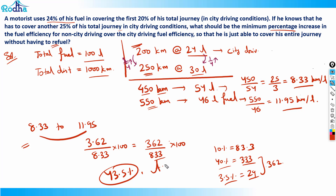The answer is approximately 43.5%. In questions like this where no actual values are given, you can just assume values — assume total fuel = 100 liters and total distance = 1000 km. That will solve the purpose.